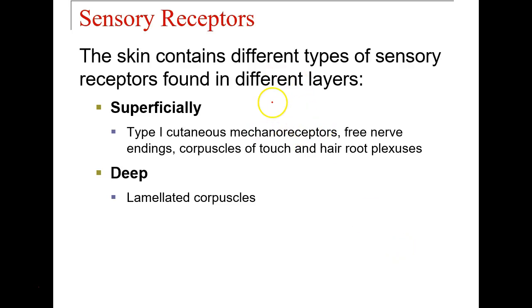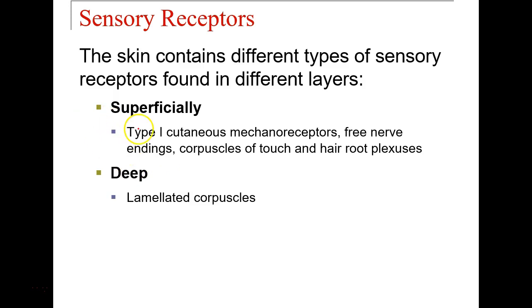Some of the sensory receptors we have are going to be for touch, pain, and temperature, and these are going to be housed within all these different types of receptors. We have some superficial and a couple deep — laminated corpuscles will be more deep.